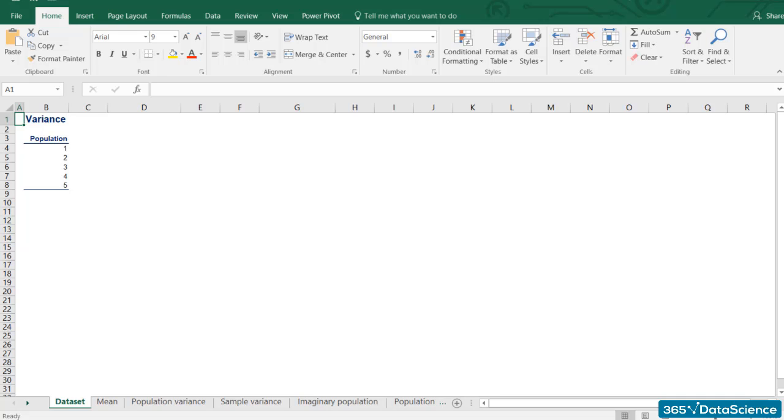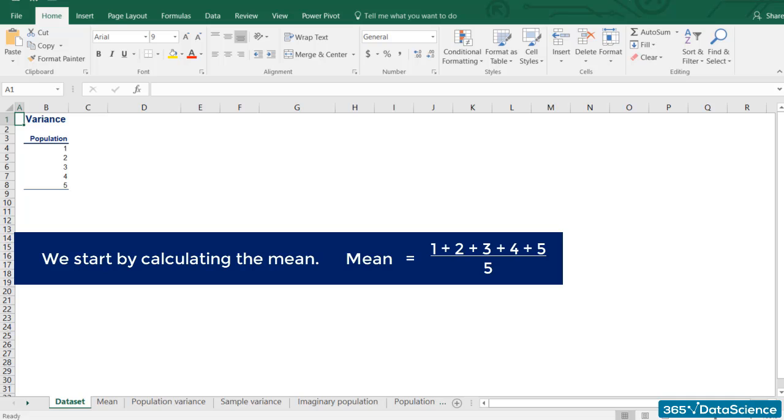Let's find its variance. We start by calculating the mean: 1 plus 2 plus 3 plus 4 plus 5 divided by 5 equals 3.